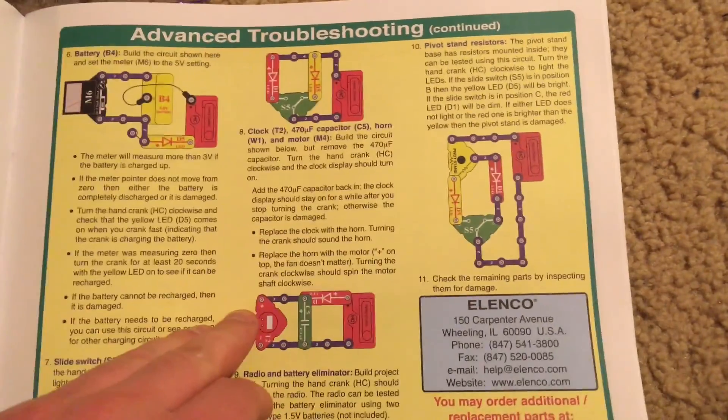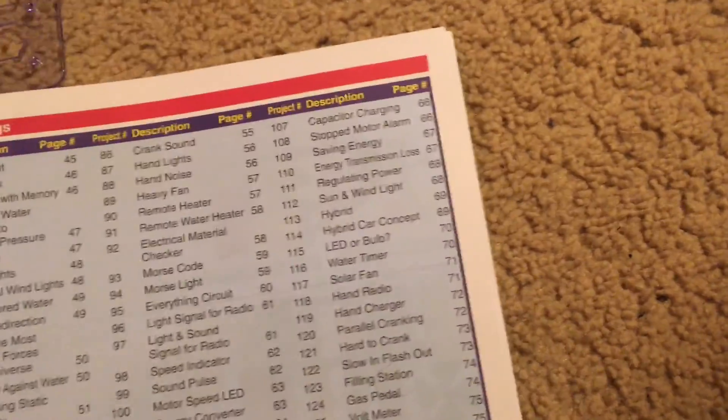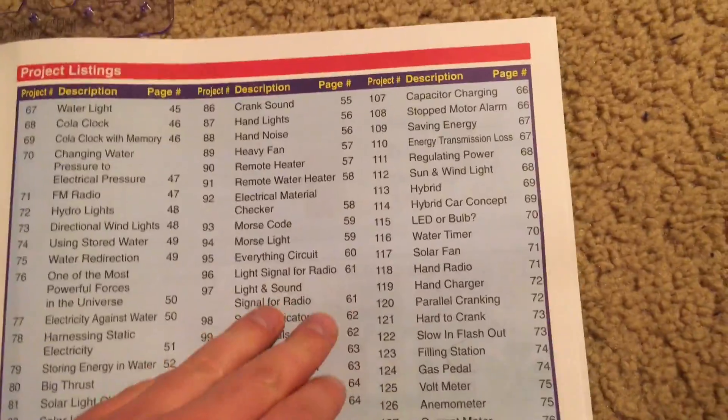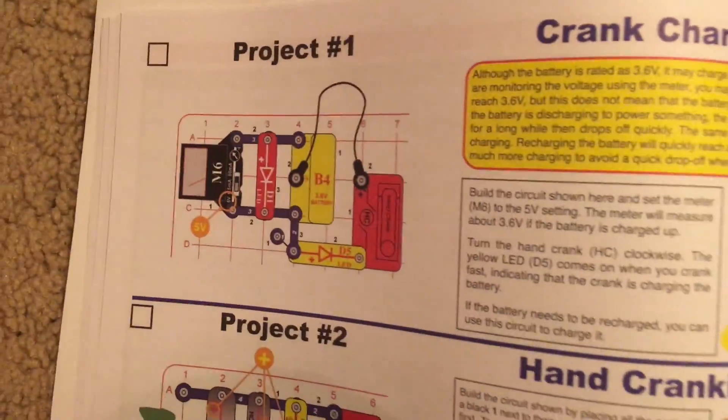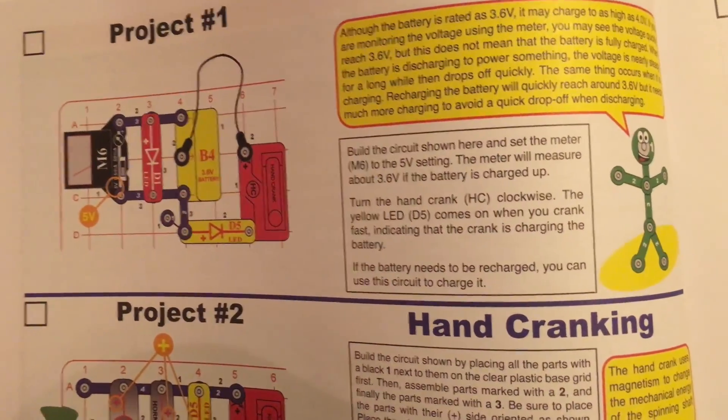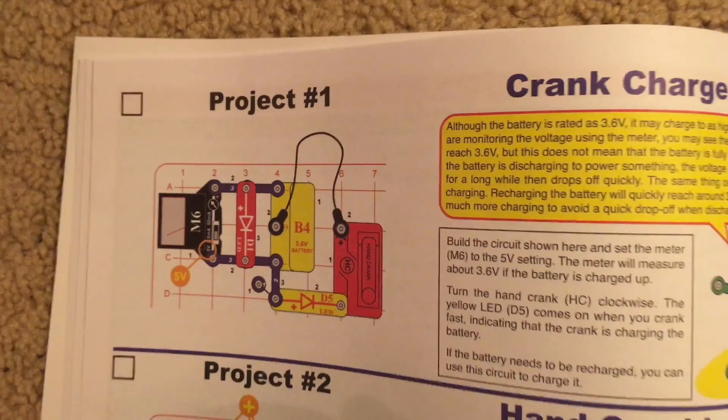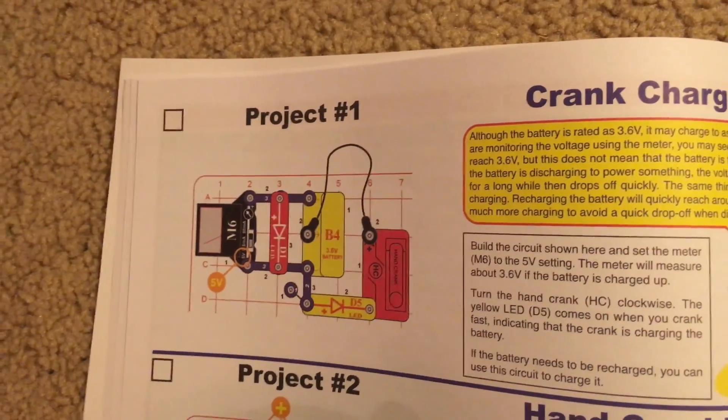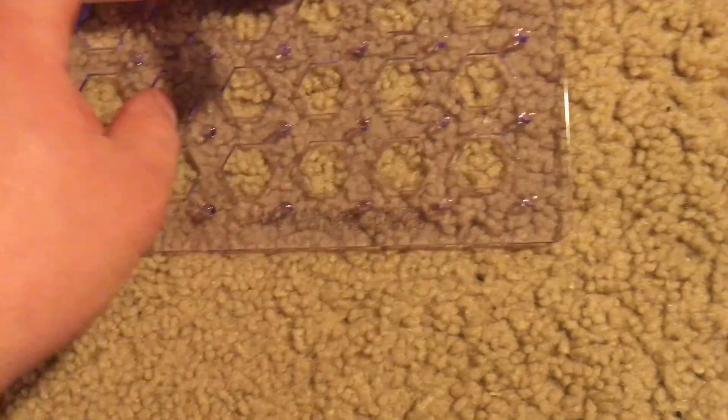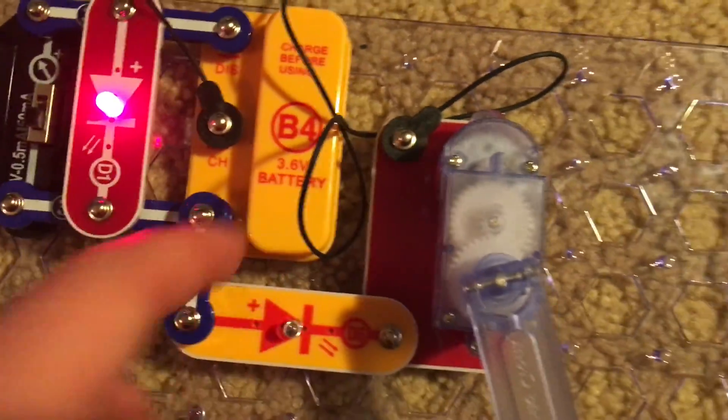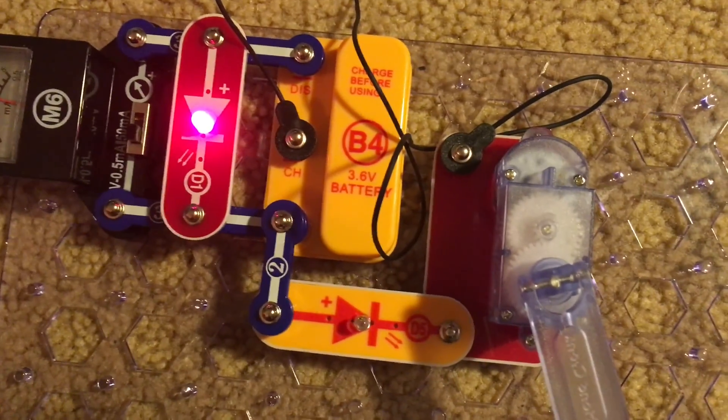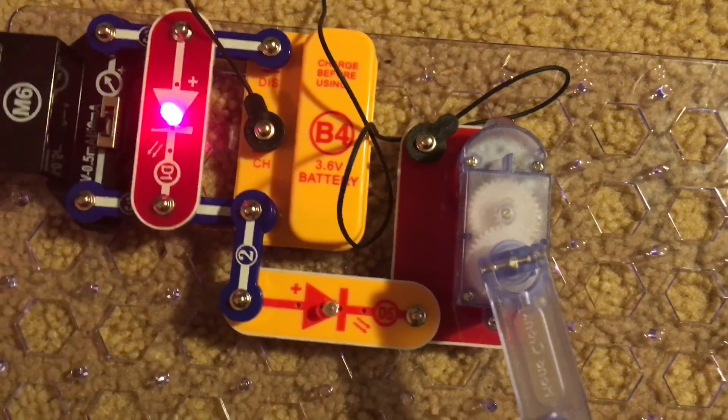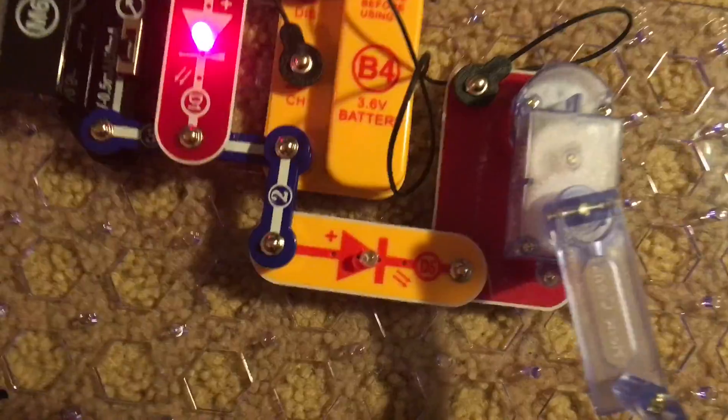I am going to go into detail about the individual parts as I use them in my projects. Now as I listed in the description, you do not need any external batteries for this kit. You have the rechargeable battery which is the B4 component included in this project and you also have the solar cell which will be used very soon.